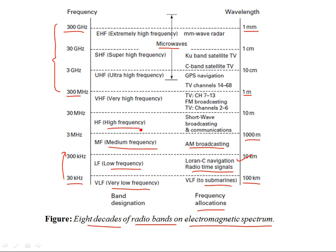At high frequencies, the band is suitable for shortwave broadcasting and communications. As the frequency rises, the wavelength becomes shorter. At very high frequencies, FM broadcasting is from 88 MHz to 108 MHz. TV broadcasts also occupy this frequency band, and we now have digital modulation schemes for it — not just analog modulation. We have digital broadcasts in this range as well.